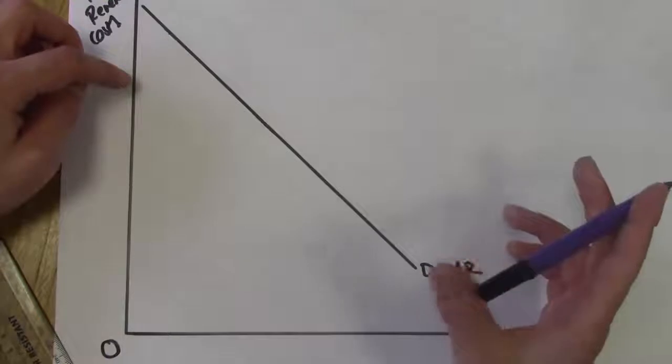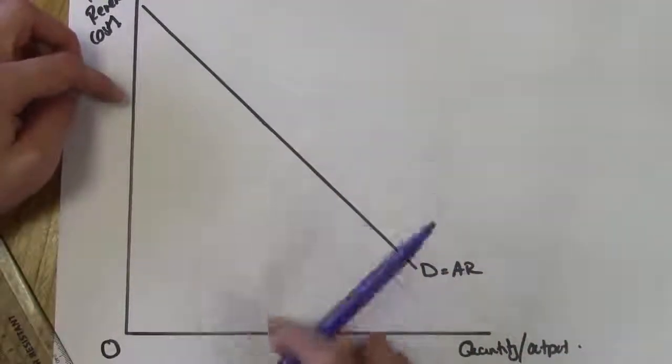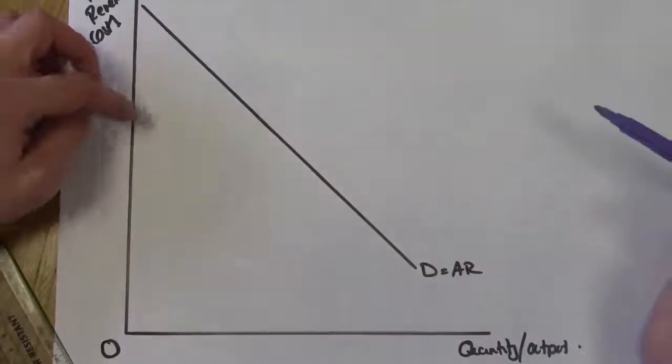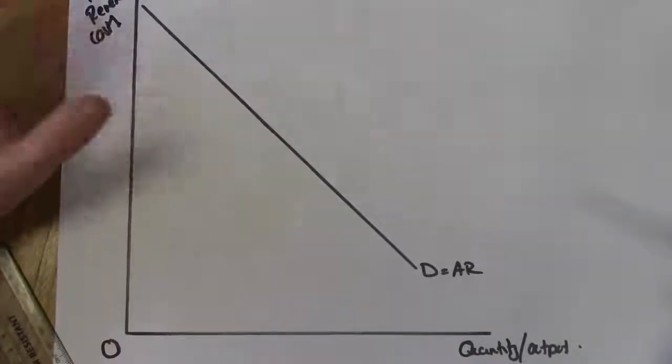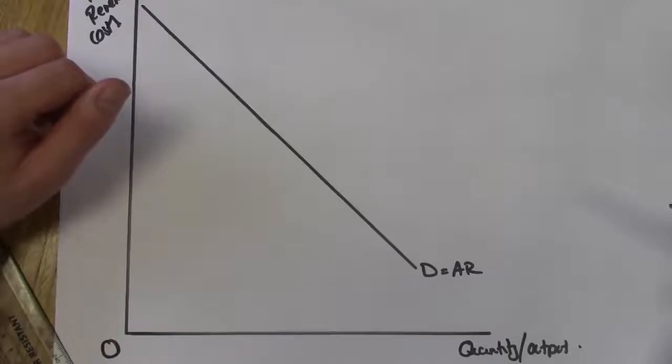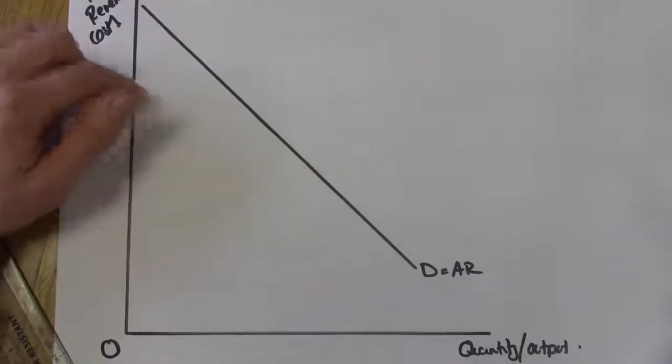But anyway, a general downward sloping demand curve is perfectly sufficient. So D, demand curve, also equals the average revenue curve, and it's downward sloping. Note that in this case, going back to, if we draw a dash line across here for example, we would say that if we increase the price, quantity demand would decrease.